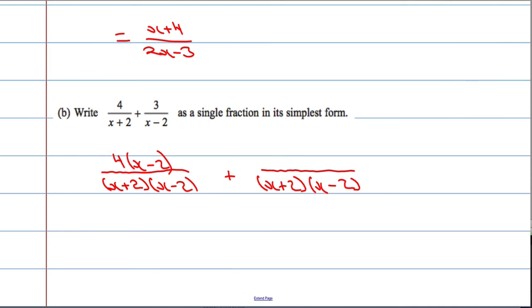Similarly here, it's going to be 3 times x plus 2 because I can cancel x plus 2 above and below the line and I end up with 3 over x minus 2.